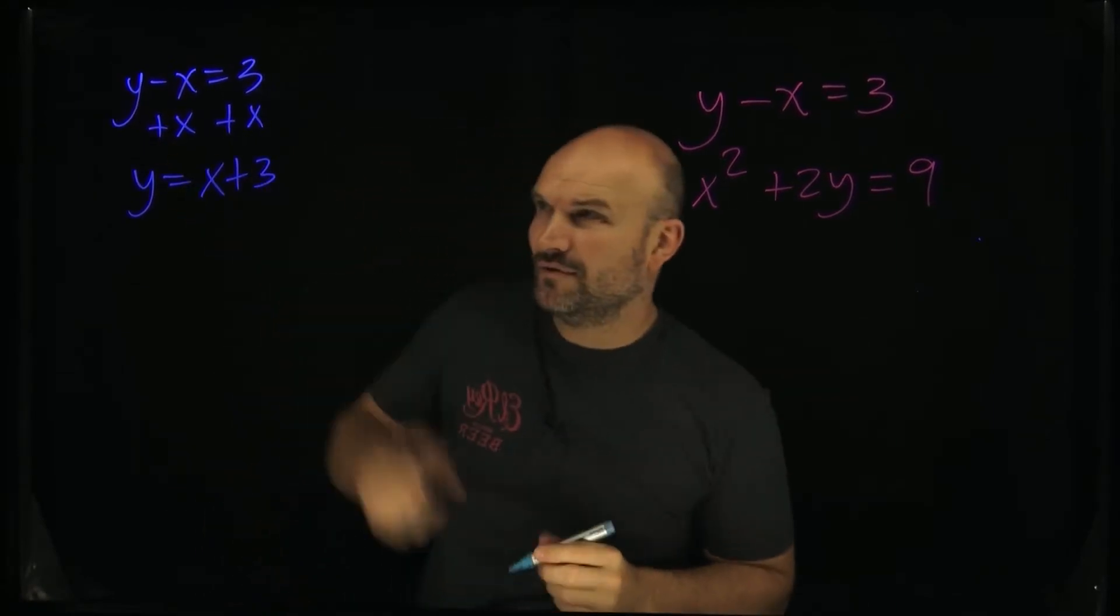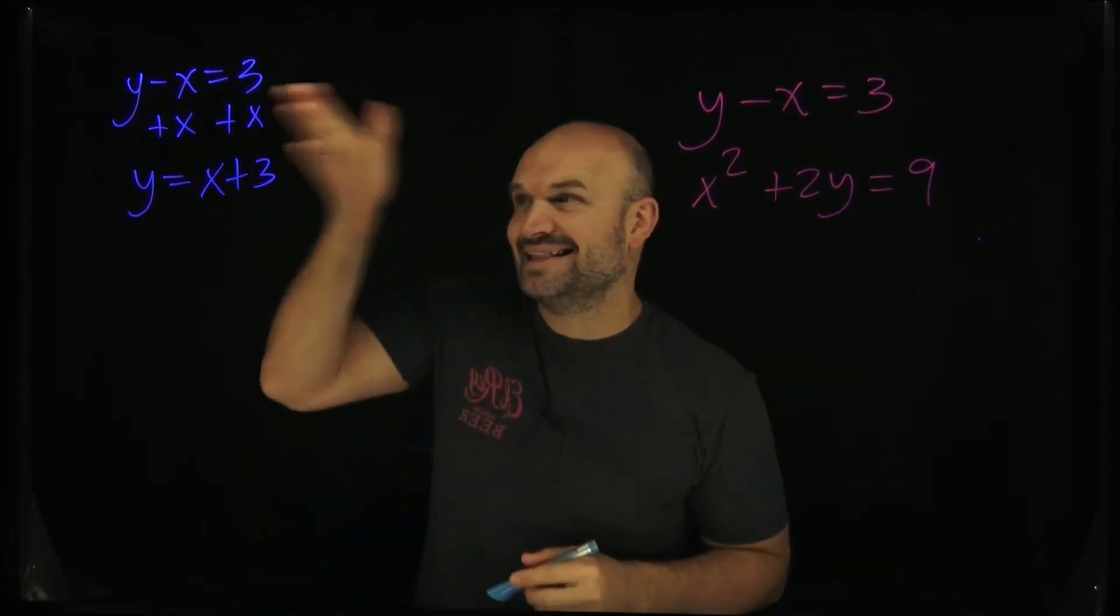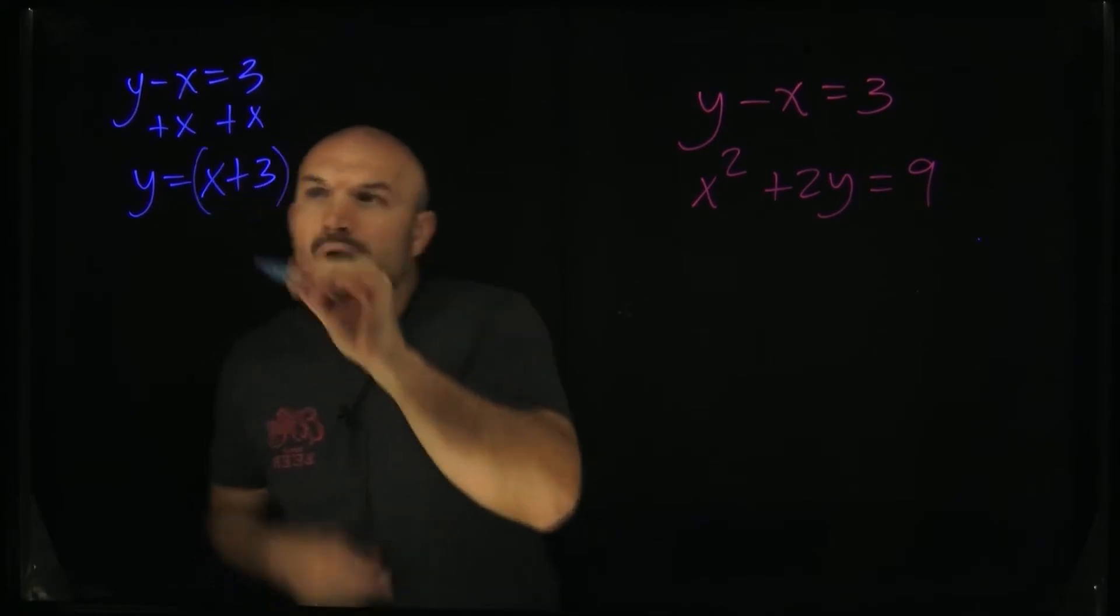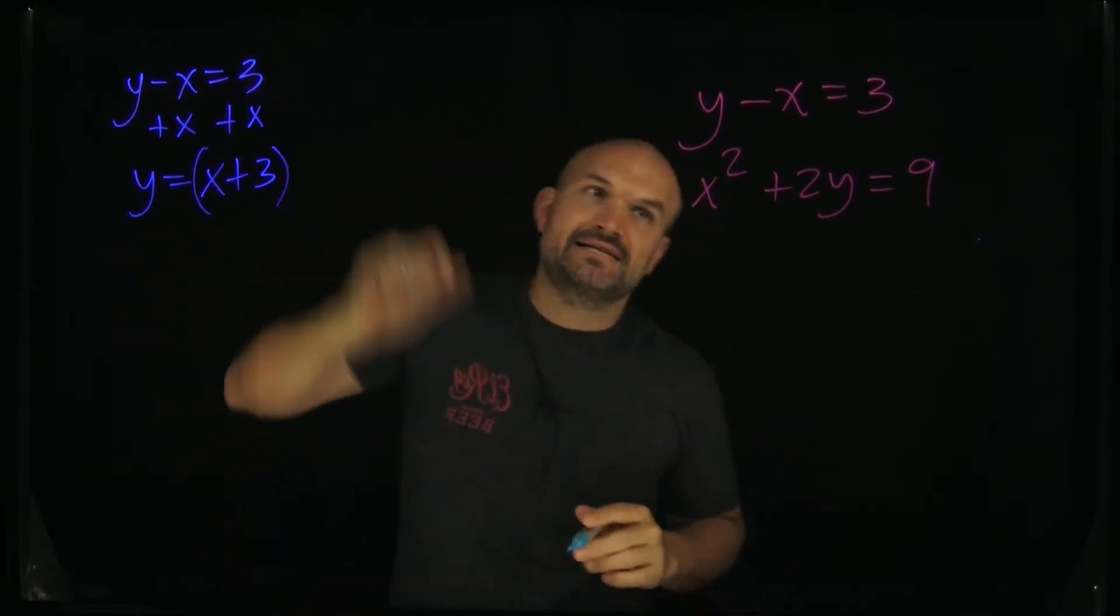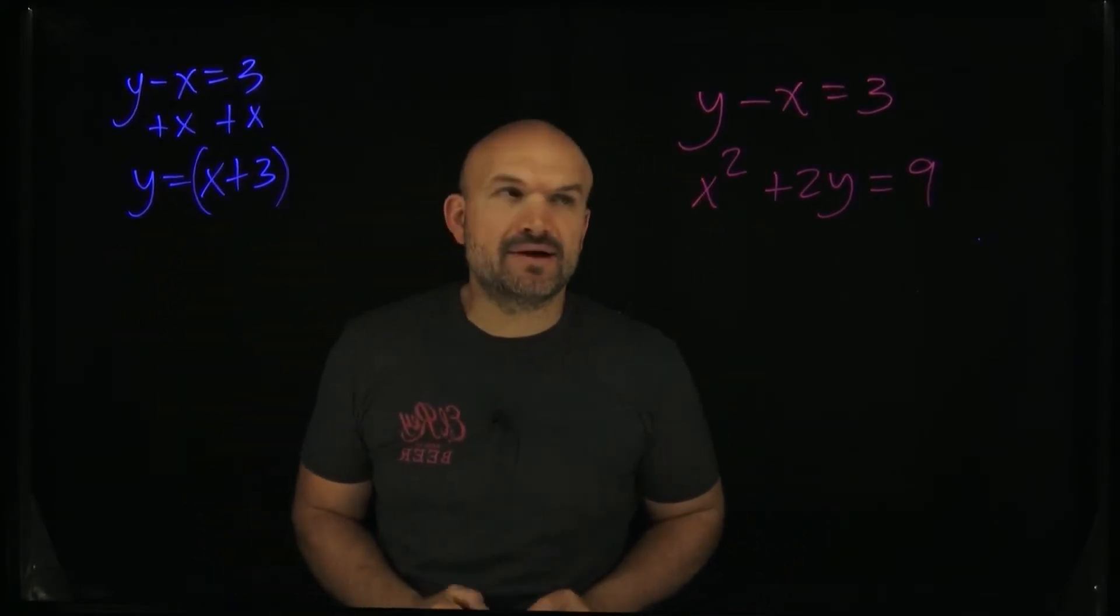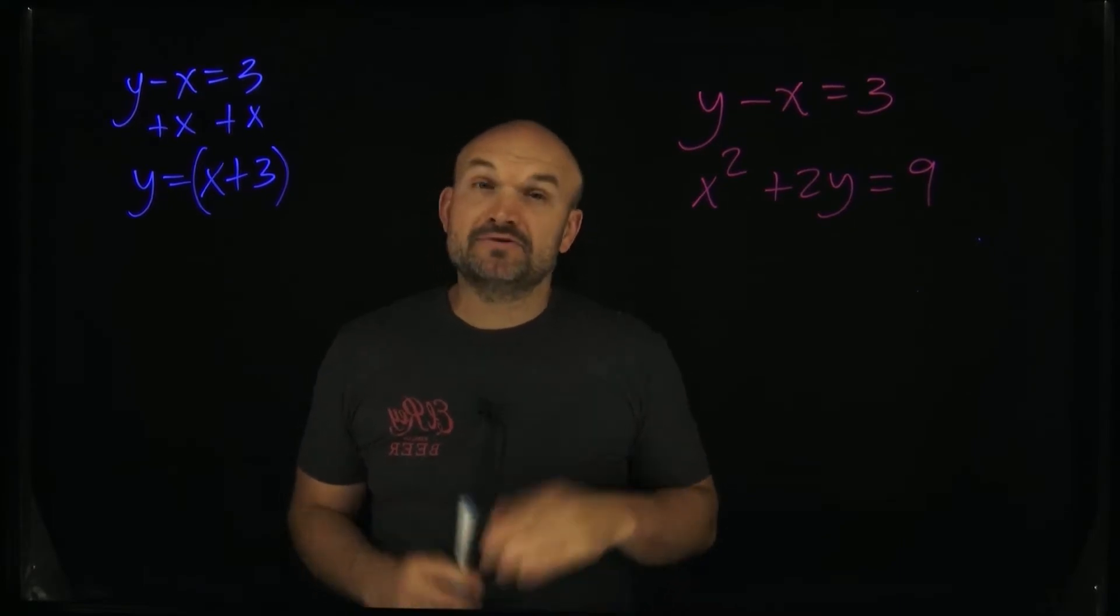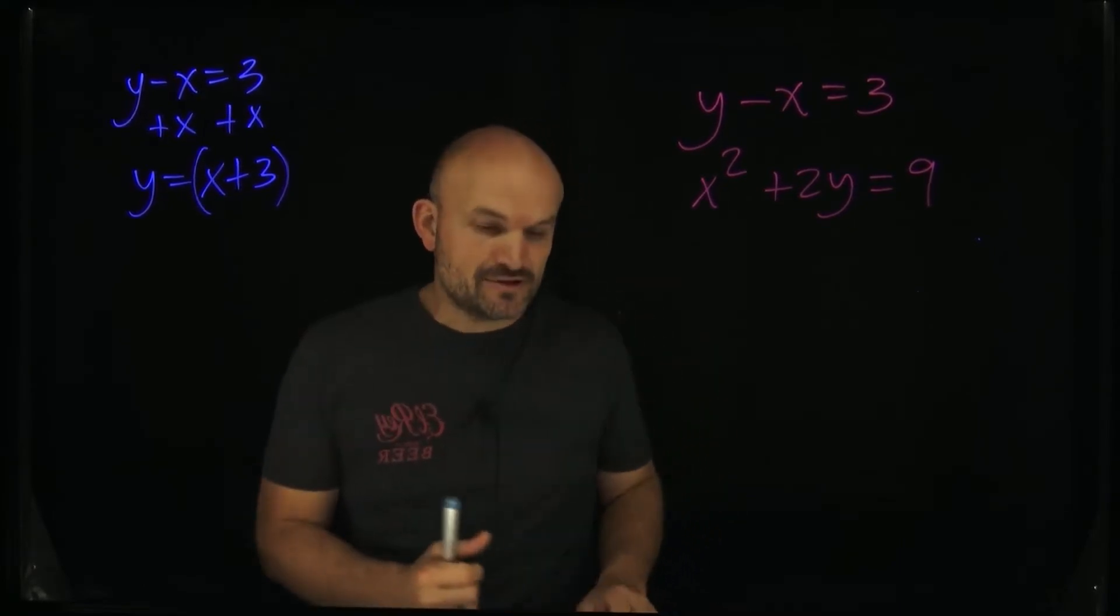And you can see solving for y was pretty simple, right? I just had to add the x to the both sides. Now again, here's what's important here. y is equal to parentheses x plus 3. Now, why am I putting parentheses around there? The reason why I'm putting parentheses around there is because it's one of the most common mistakes students will make.